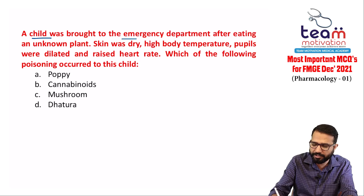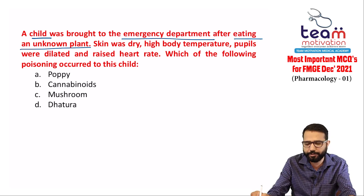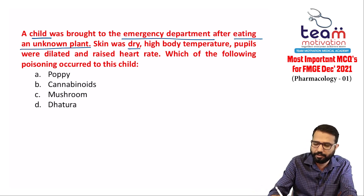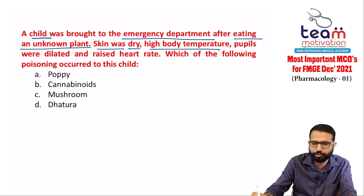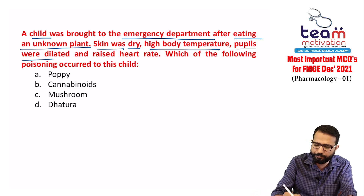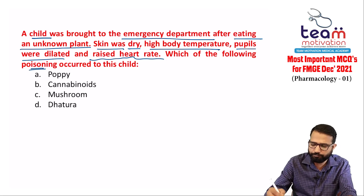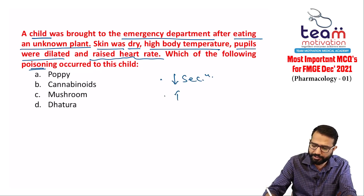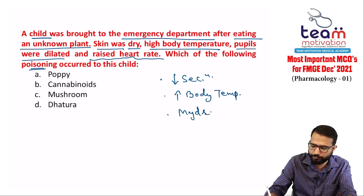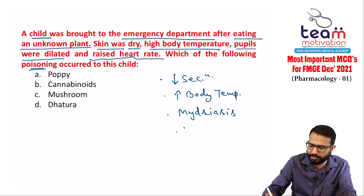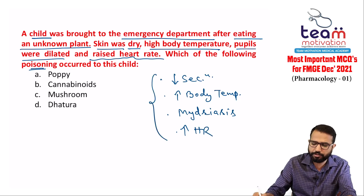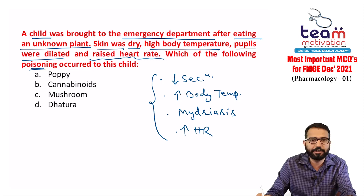Next question: a child was brought to the emergency after eating an unknown plant — a common poisoning case. Findings: skin is dry, high body temperature due to decreased sweating, dilated pupils (mydriasis), and raised heart rate (tachycardia). Which poisoning has occurred?